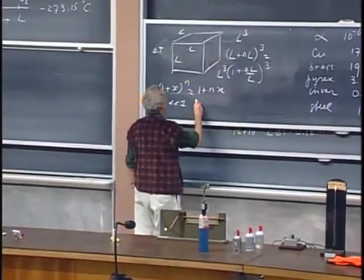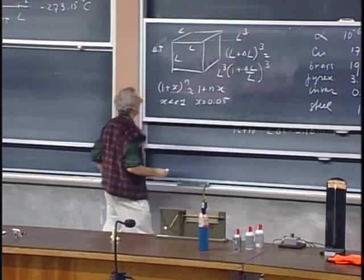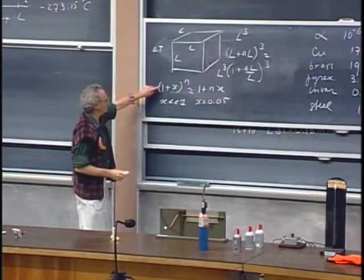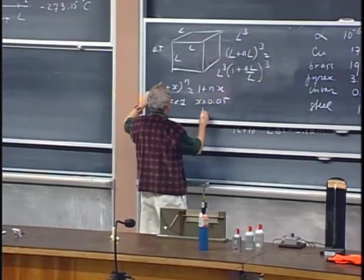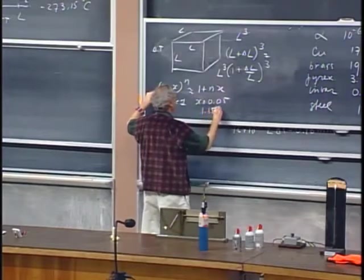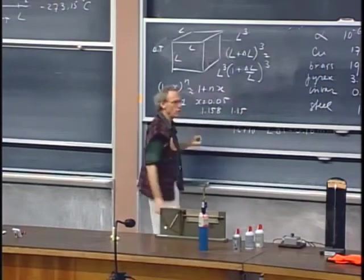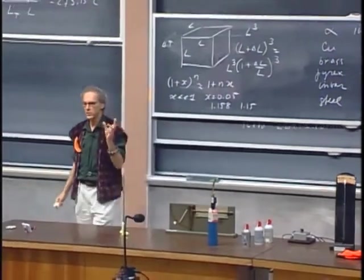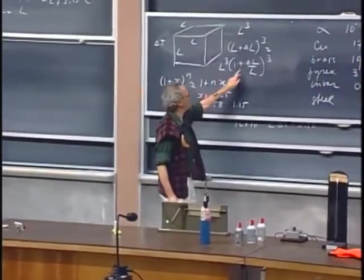If you, as an example, if you take x equals 0.05 and you calculate the exact value with your calculator, you would find 1.158. If you do it this way, you will find 1.15, which is very close. The approximation is better than one percent. So I will use the same approximation here.